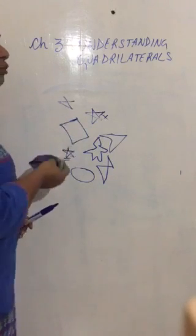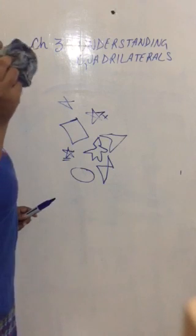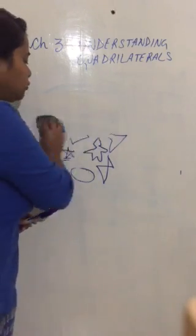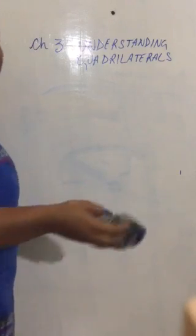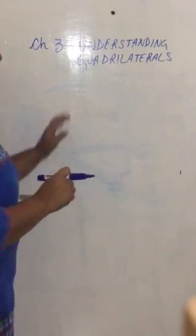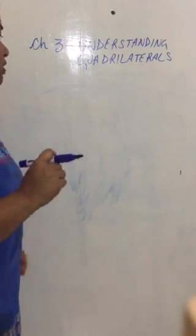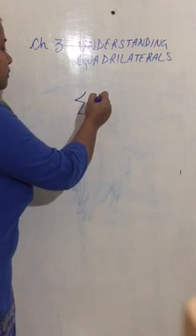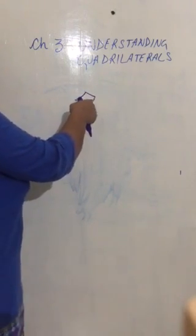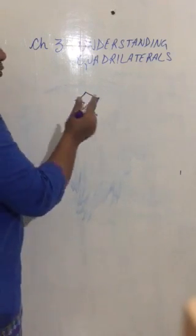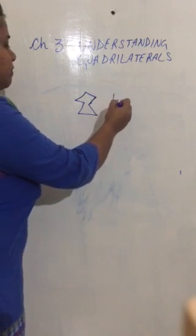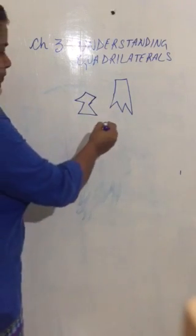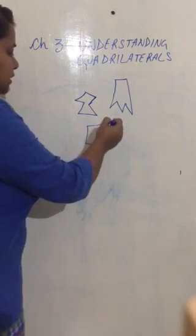So you have understood what are curves, open curves, closed curves, and simple closed curves. Now let us discuss about simple closed curves made up of line segments. Suppose this — I have drawn with hand so it has become a little bit curved, but this is a straight line. So this is a simple closed curve, this is a simple closed curve, and this is a simple closed curve.